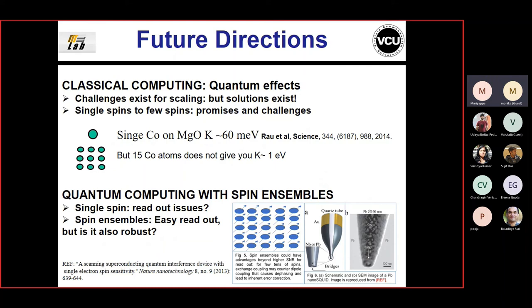In terms of future directions, looking at quantum effects is interesting. When you have single atoms, you can have large anisotropies, but when you put a bunch of atoms together, you don't necessarily get 1 eV because of crystal fields. One quantum challenge in classical computing is how to scale to the smallest possible size and still have the 1 eV barrier. Another interesting thing: if you have multiple spins for readout and there's dipole coupling between them, they'll cause dephasing. But what if you bring them close enough that despite dipole dephasing, there's exchange coupling? If one dephases one way and another dephases the other way, the exchange pulls them back - there may be inherent error correction in the physics itself. These are interesting problems to look at.